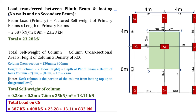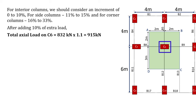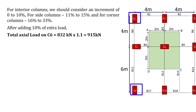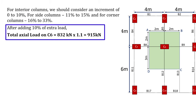Finally, total load on column 6 equals load transferred from roof to first floor (387 kN) plus load from first floor to plinth (408 kN) plus load between plinth beam and footing (23.28 kN) plus self weight of column (13.11 kN), giving 832 kN. Since this is an approximate value, we add an increment for bending due to fixity: 0–10% for interior columns, 11–15% for side columns, 16–33% for corner columns. Adding 10% to column 6: 832 × 1.1 = 915 kN.